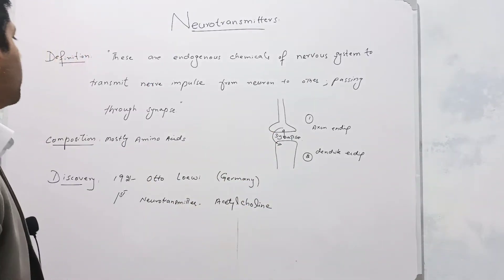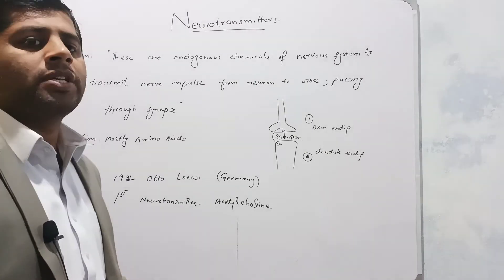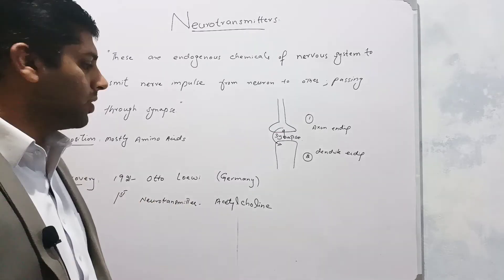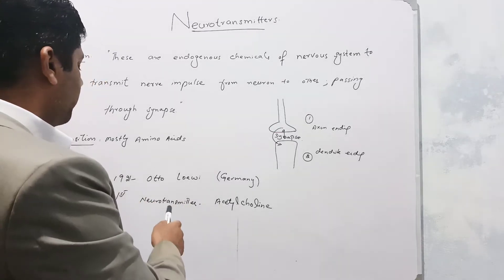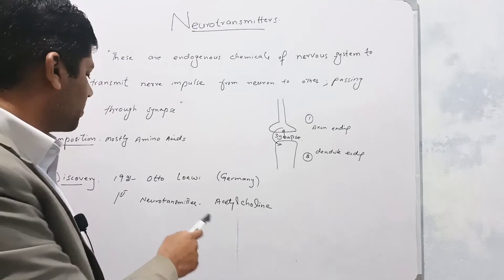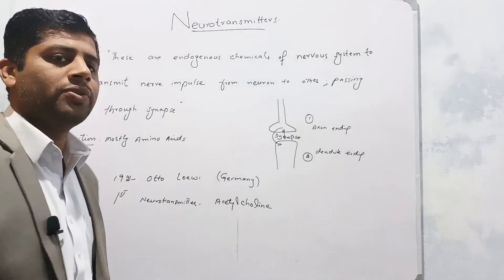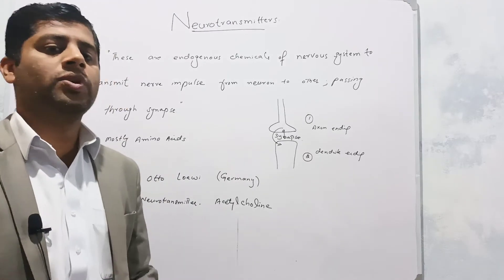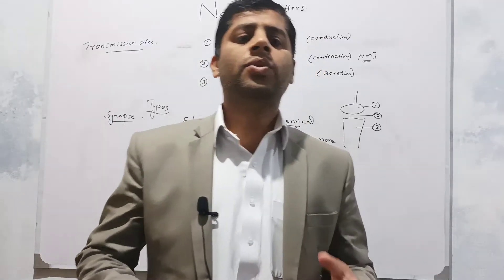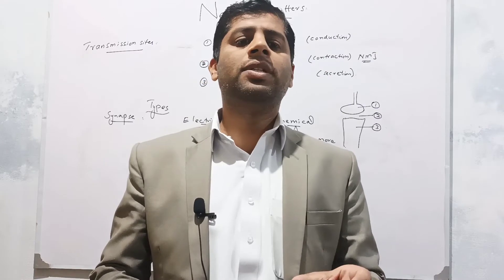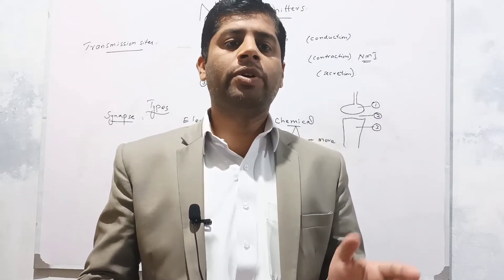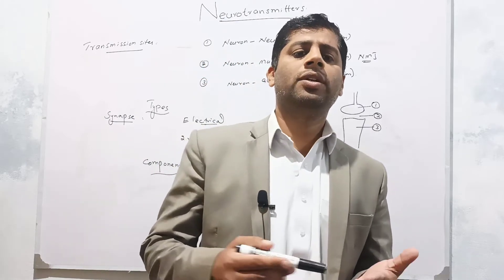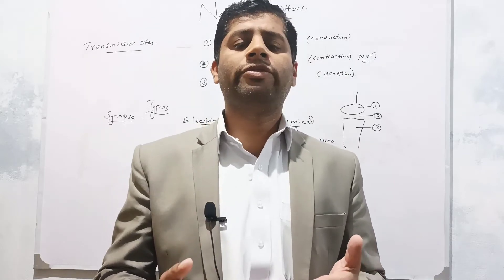Most neurotransmitters are made up of amino acids. As far as discovery is concerned, the first neurotransmitter was acetylcholine, discovered by Otto Loewi in 1921 — he was a German scientist. Neurotransmitters are required for transmission of nerve impulse, nerve message, or nerve information from one neuron to another neuron. There may be three transmission sites in which neurotransmitters are required.